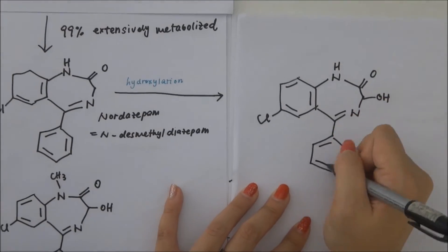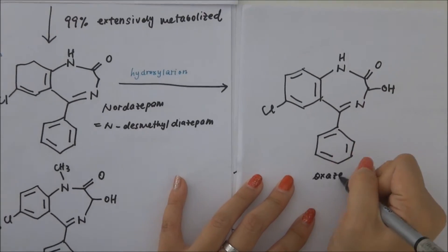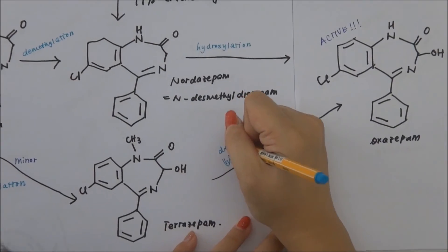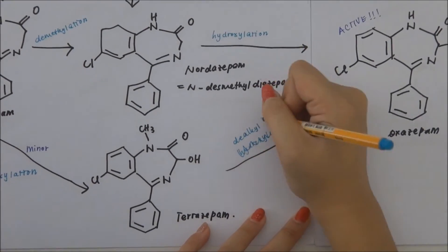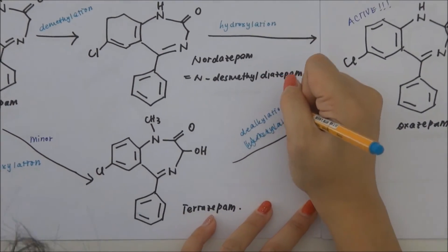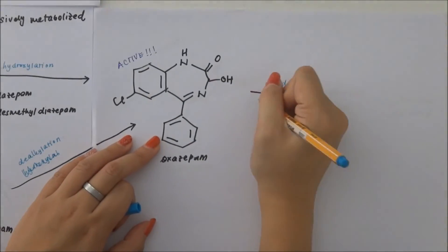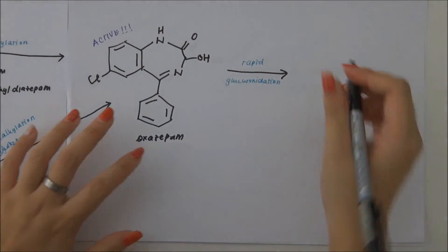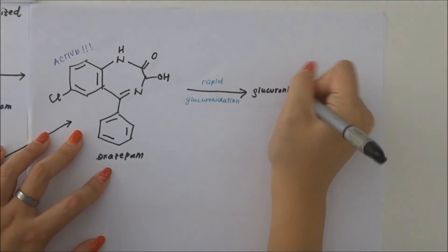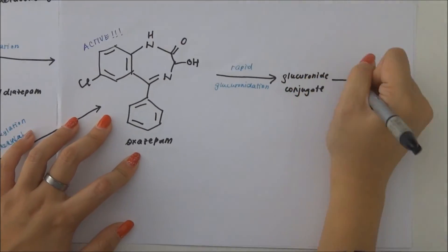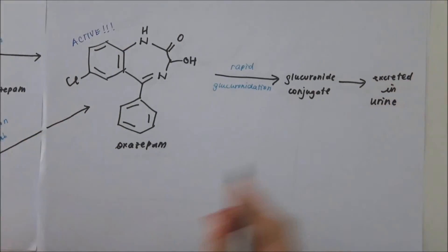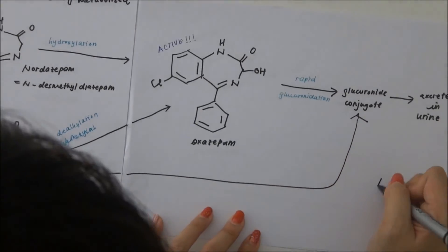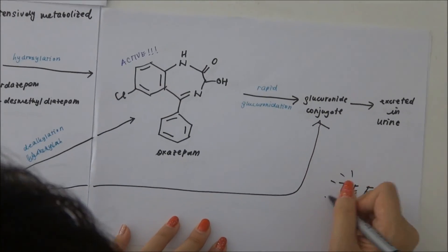Nordazepam then undergoes hydroxylation to form oxazepam. Temazepam can also undergo N-demethylation to form oxazepam. Temazepam and oxazepam undergo glucuronide conjugation in the liver and are then excreted in urine.